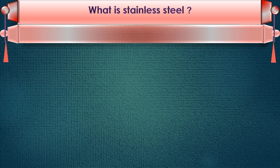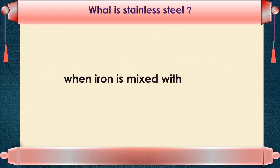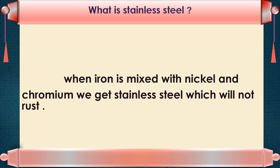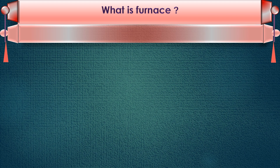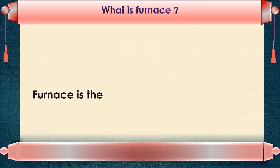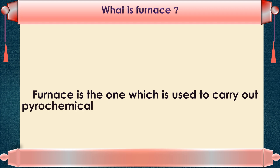What is stainless steel? Stainless steel is an alloy. When iron is mixed with nickel and chromium, we get stainless steel, which will not rust. Stainless steel is used to carry out pyrochemical processes in metallurgy.